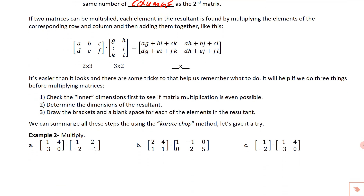Here's an example: a two-by-three times a three-by-two. The inner dimensions are both three, so we can multiply them. The result will have the outer dimensions — a two-by-two. There are four numbers to find in the resultant two-by-two.